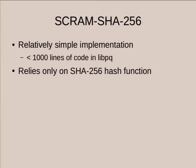SCRAM is a pretty simple implementation — under 1,000 lines of code in libpq. One caveat is that there are some large tables for Unicode normalization of passwords, which is mandated by the spec. The actual algorithm is very simple — you only need the SHA-256 hash algorithm. Compared to algorithms using elliptic curve cryptography or big integer arithmetic, SCRAM requires no complicated computations or libraries.